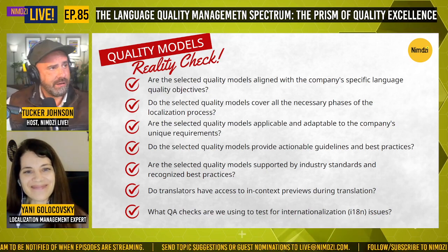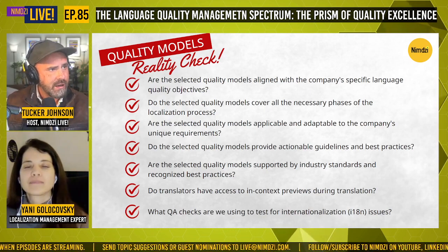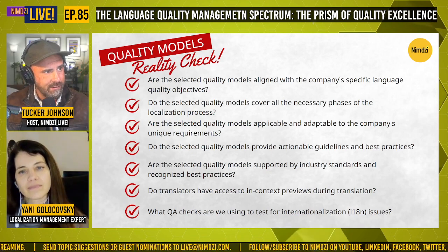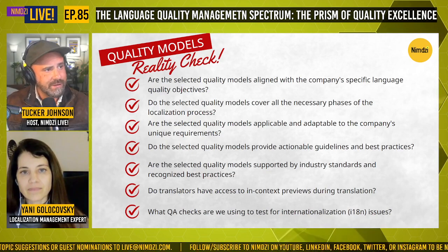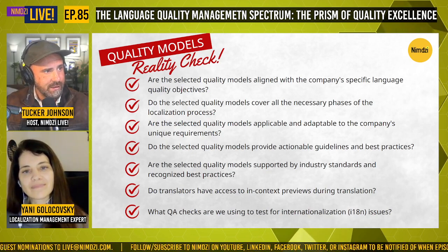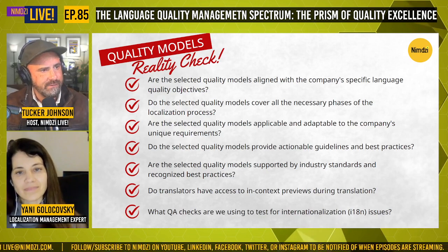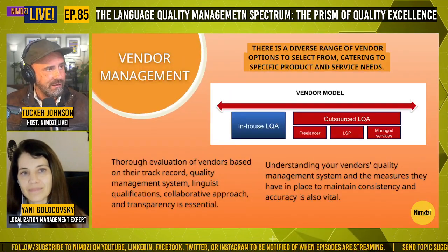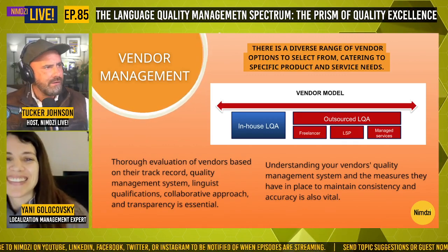Quality models reality check — questions to ask: Are the selected quality models aligned with the company's specific language quality objectives? Do they cover all necessary phases of the localization process? Are they applicable and adaptable to the company's unique requirements? Do they provide actionable guidelines and best practices? Are they supported by industry standards? Do translators have access to in-context previews, and what QA checks are we using to test for internationalization issues?